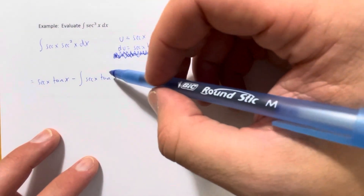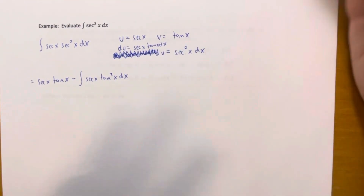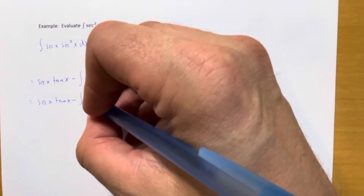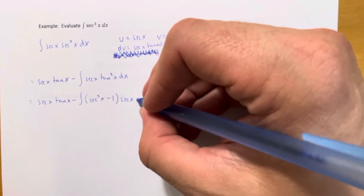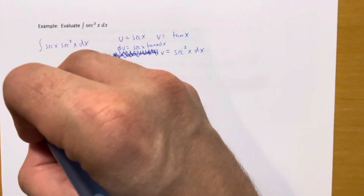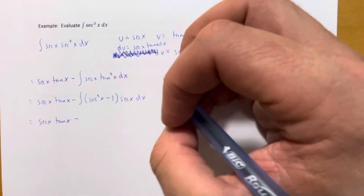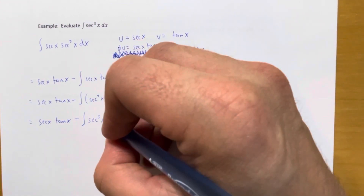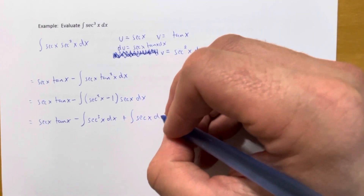This still doesn't fit either strategy case, so we use the Pythagorean identity on tangent squared: replace it with secant squared of x minus 1. Distributing the secant of x gives secant cubed minus secant. Splitting into two integrals: minus the integral of secant cubed of x dx, and then the minus distributes to give plus the integral of secant of x dx.